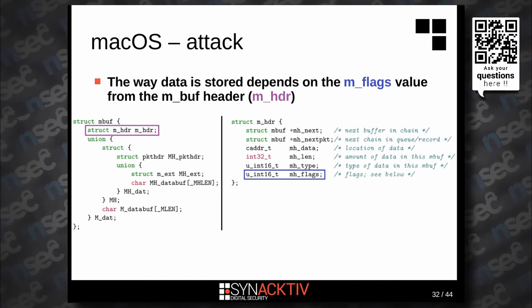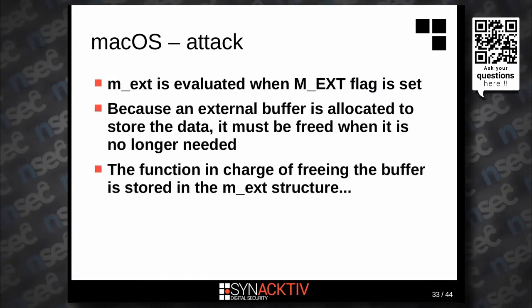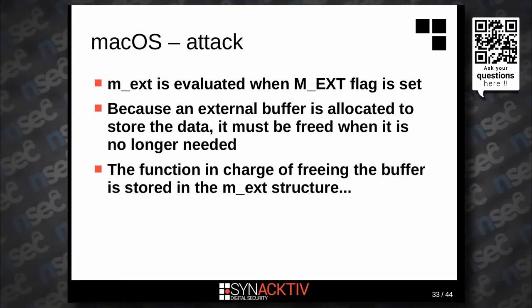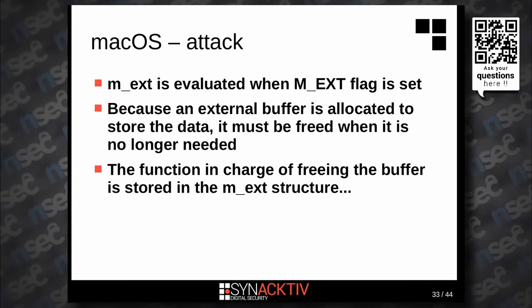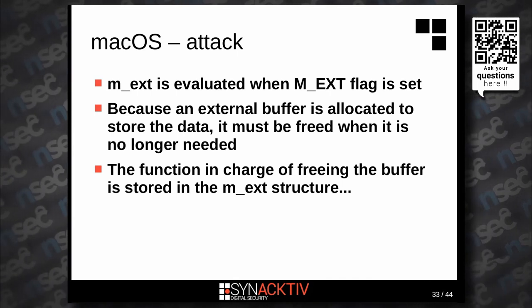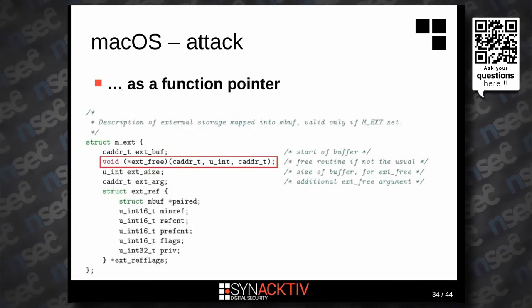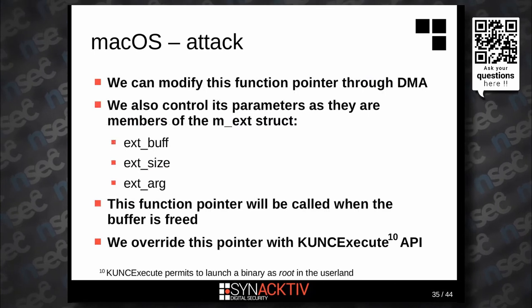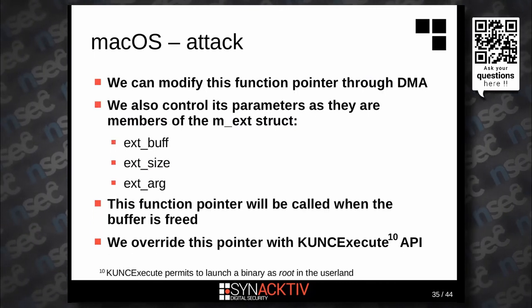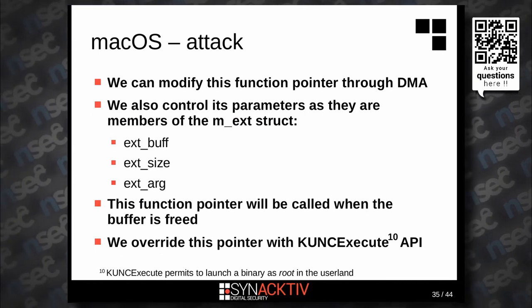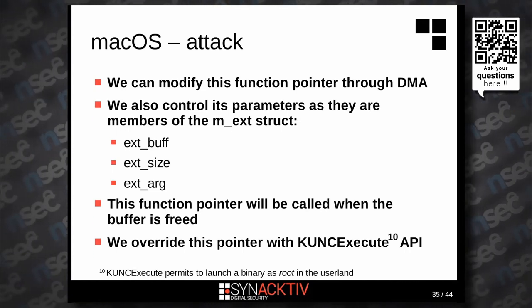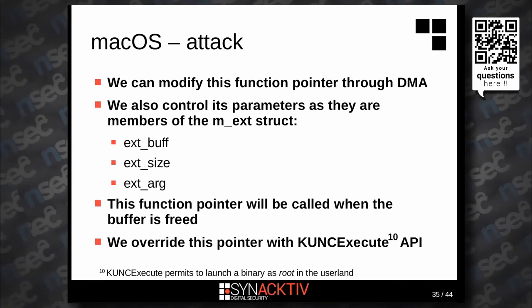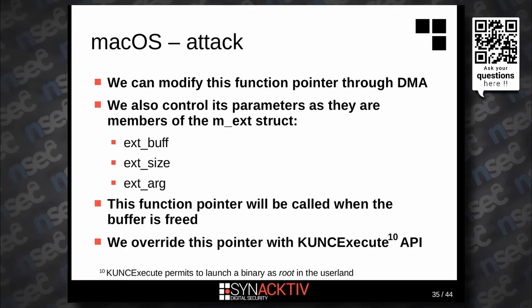So if we have the M_EXT flag set — which occurs when there are big packets, so pretty often — an external buffer is allocated to store the data. It must be freed when no longer needed. The function in charge of freeing the buffer is stored in the m_ext structure as a function pointer. Because we have DMA access, we can modify this function pointer through DMA and also control its parameters, which are also members of the m_ext structure. All we have to do is override this pointer with the kUNCExecute API, which permits launching a binary as root in userland.